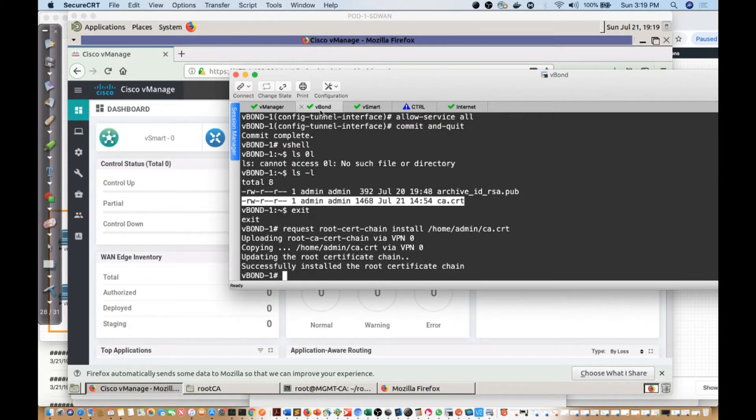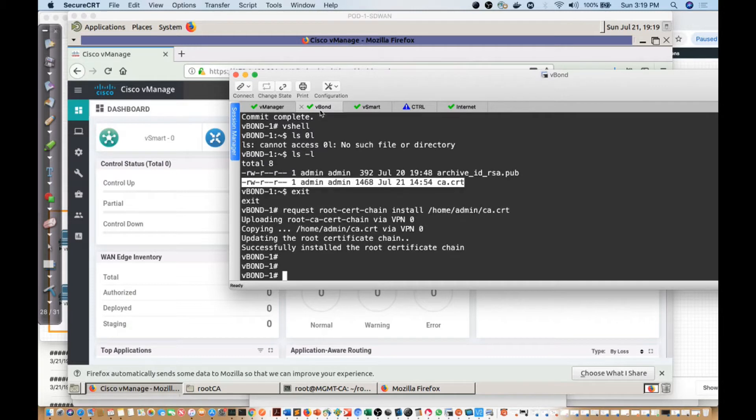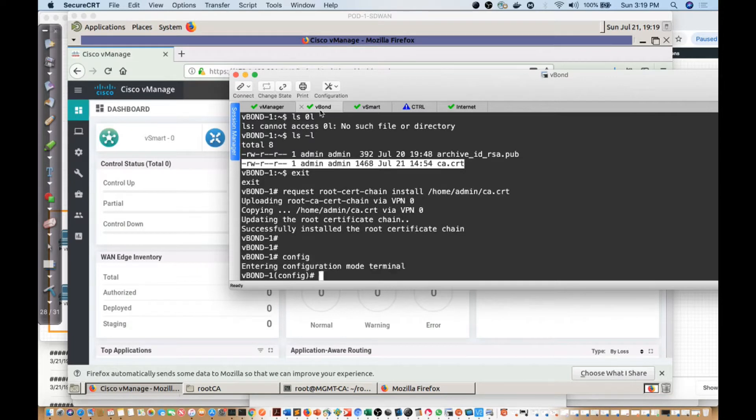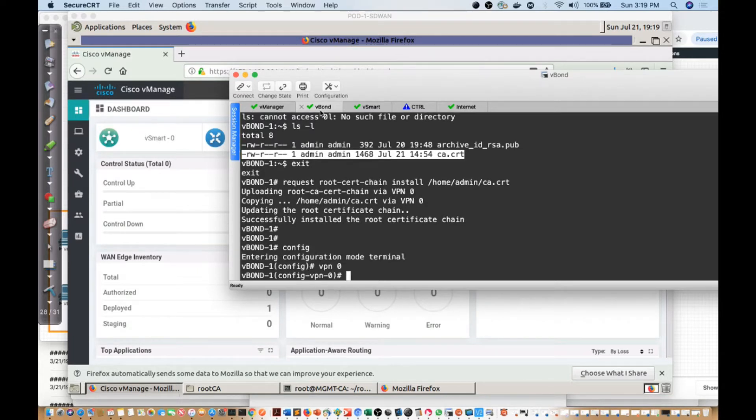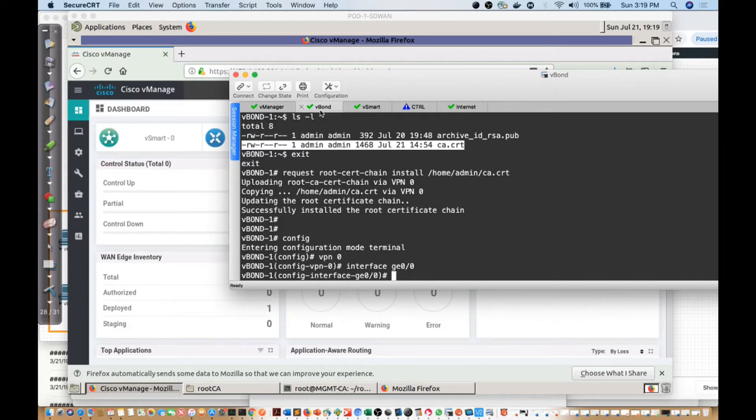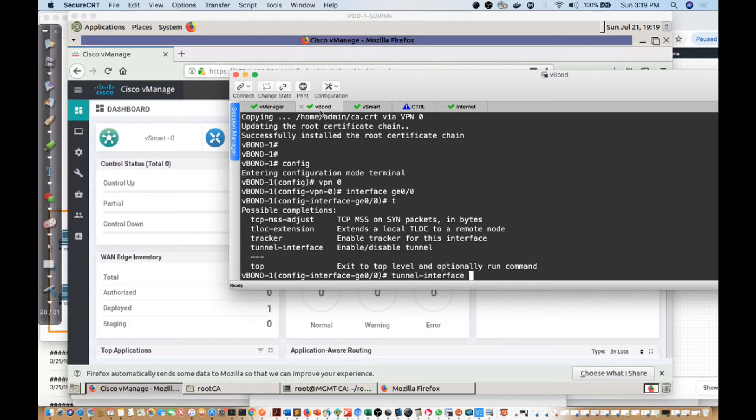Let's do the vBond. vBond is a little bit different as it's like a repurposed vEdge device. I'll say config T, VPN 0, interface G0/0, and I will say that I want to do my tunnel interface.